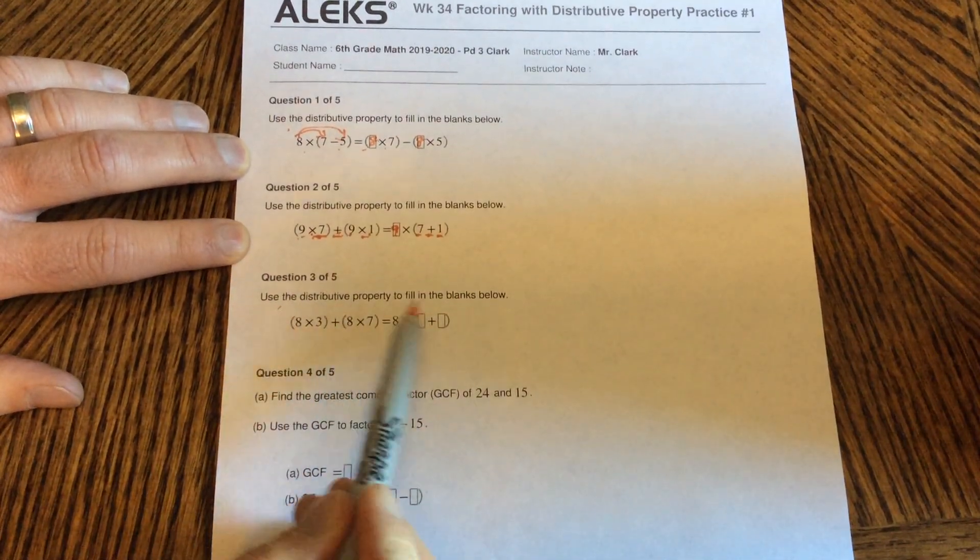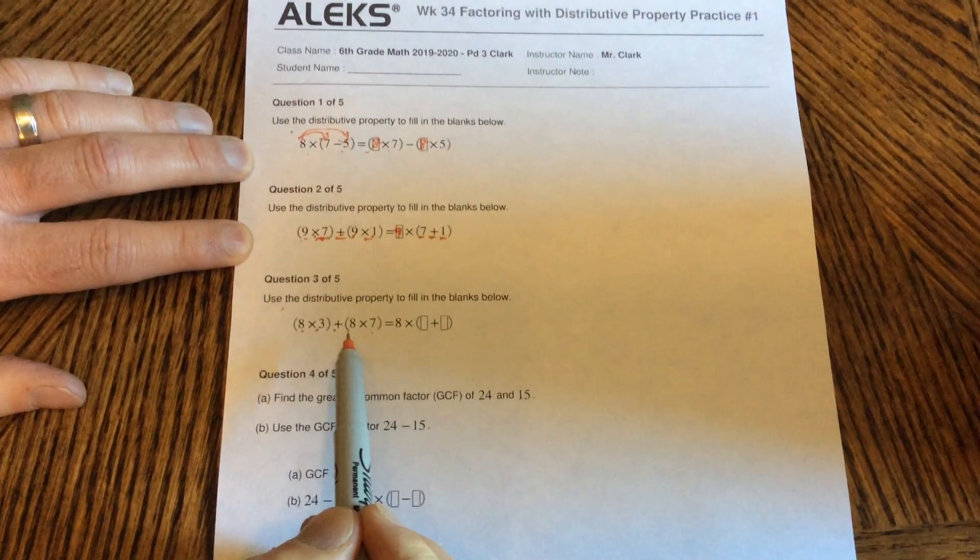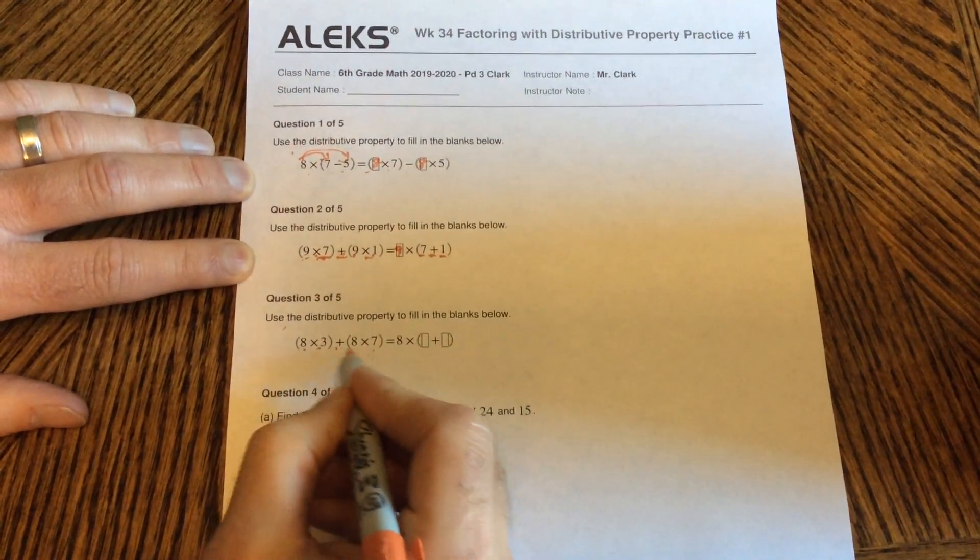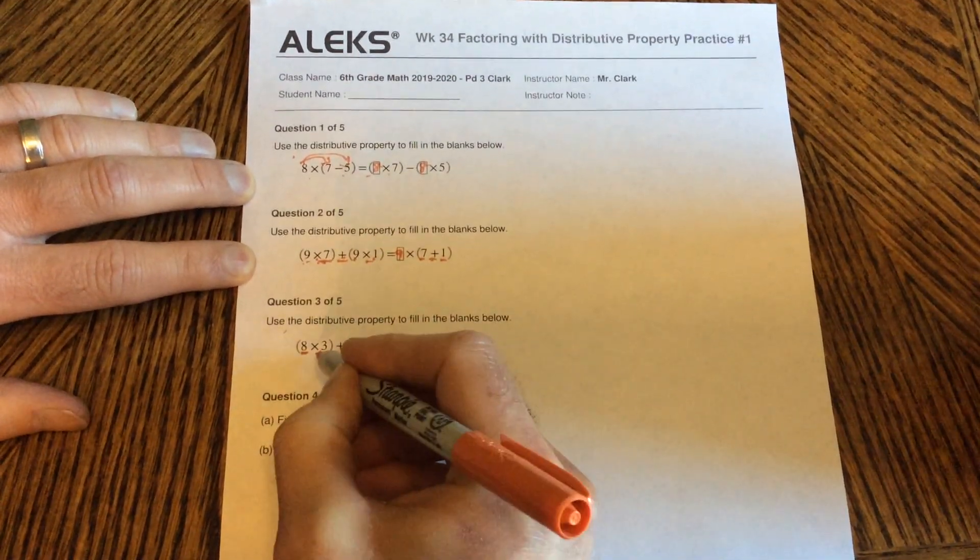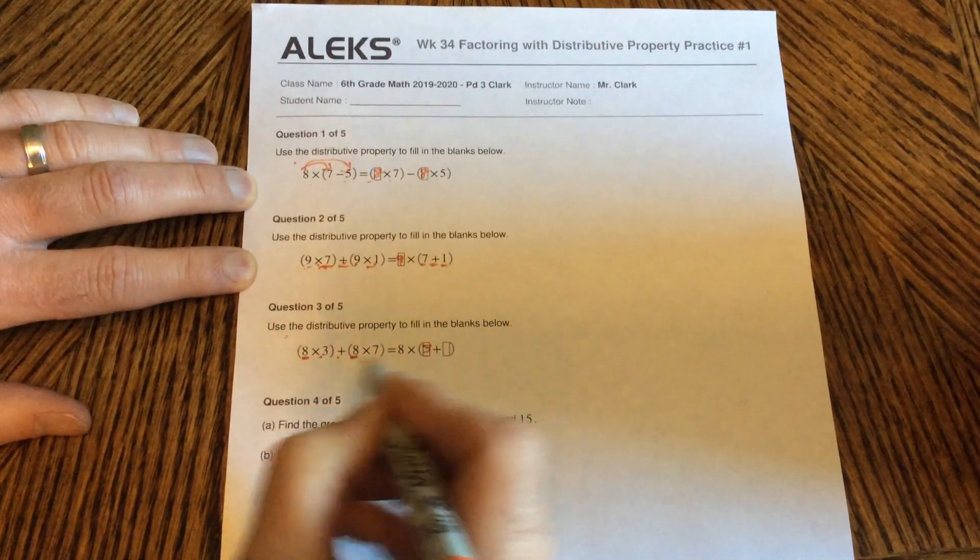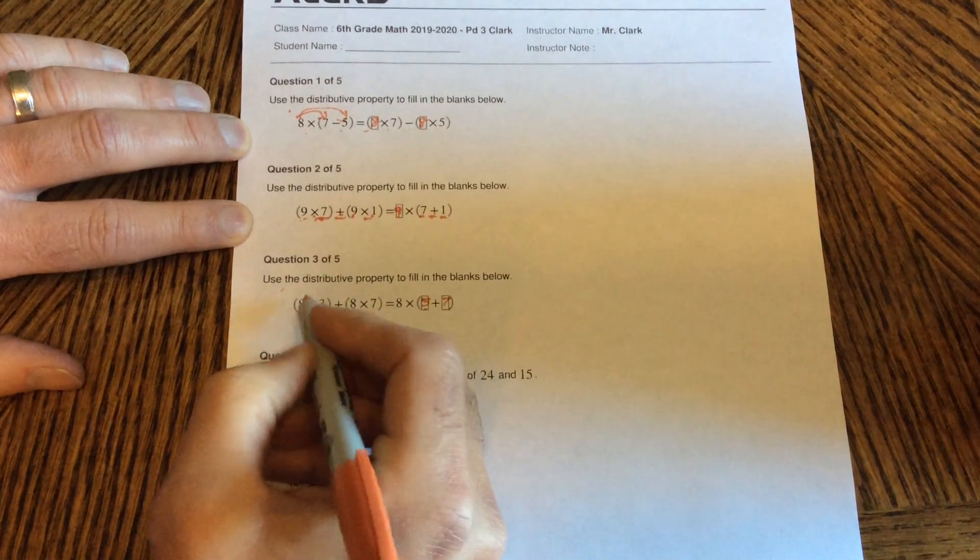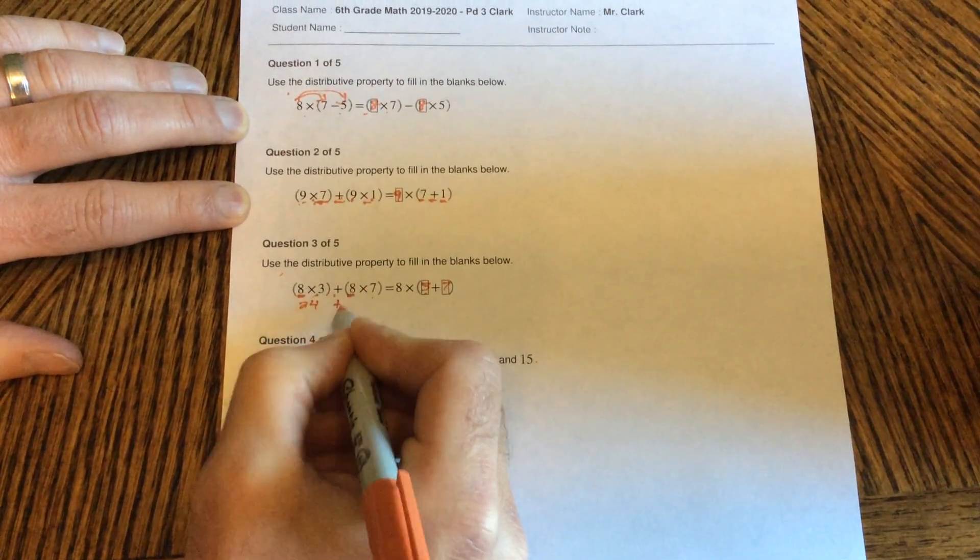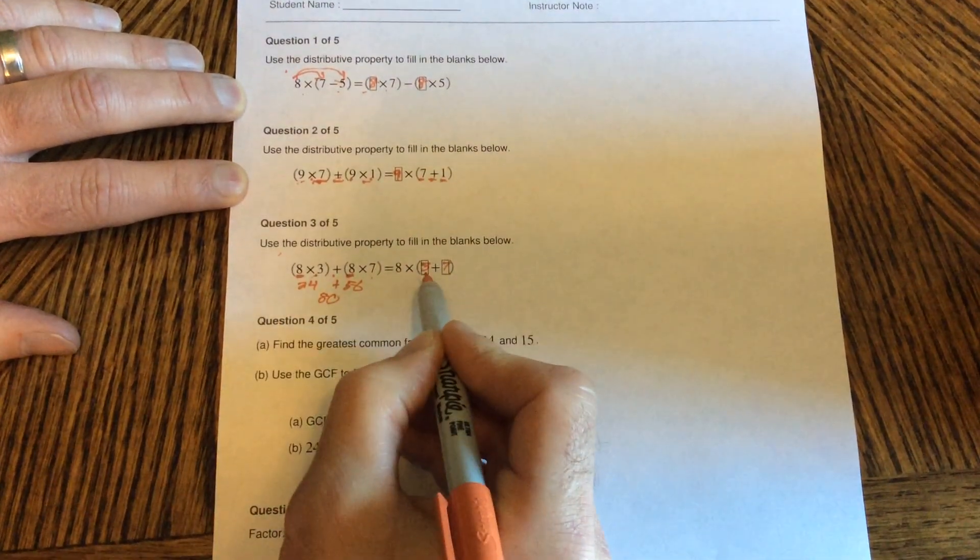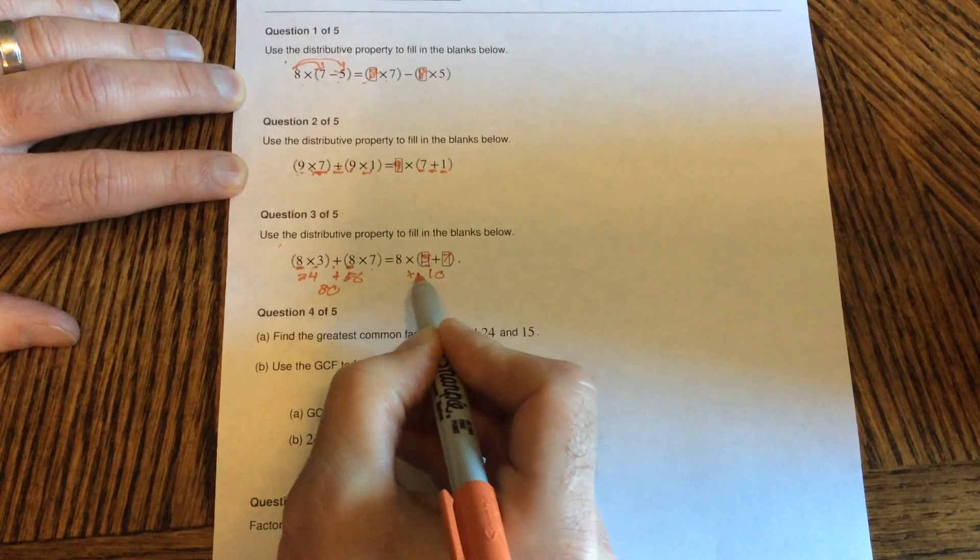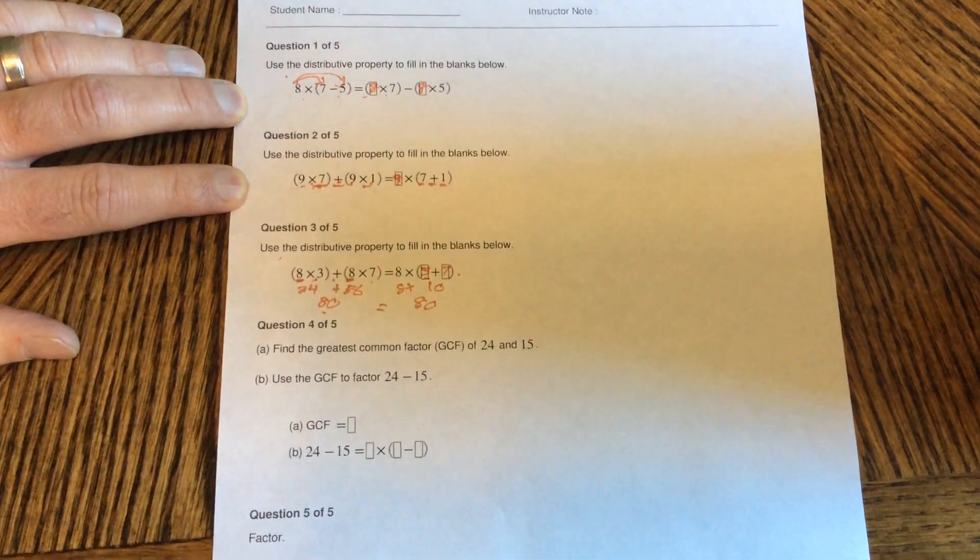Question 3. Use the distributive property to fill in the blanks below. 8 times 3 plus 8 times 7. So we're factoring out the 8s. So 8 times, here we have 8 times 3 plus 8 times 7. So we have 3 and 7 in there. We can always check our answer if we want to be sure. 8 times 3 is 24 plus 8 times 7 is 56. My answer should be 80. Over here, 3 plus 7 is 10. 8 times 10 is 80. 80 equals 80. We should always balance.